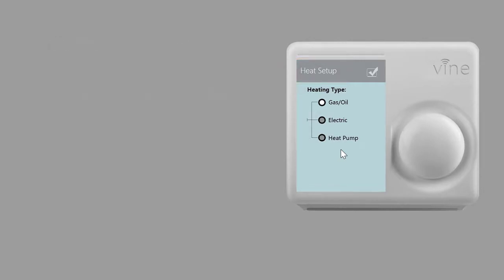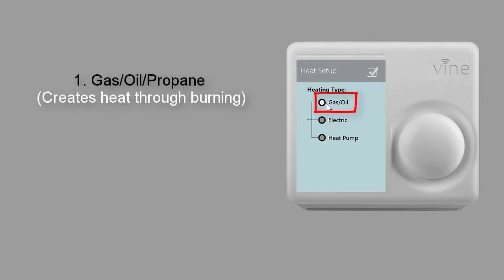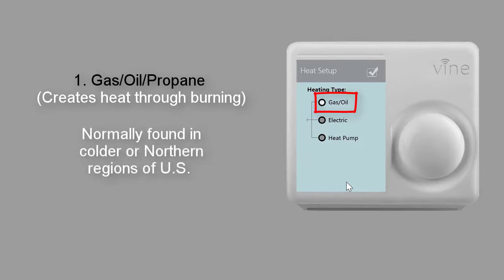The first option is gas, oil, or propane, which is a furnace heating system that creates heat through the burning of natural gas. Cool air is drawn into the heat exchanger where it is warmed by the gas. Gas heating systems are mostly used in colder or northern regions.